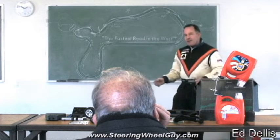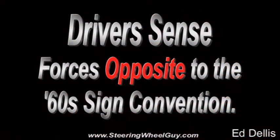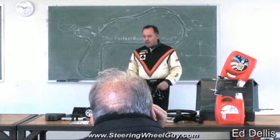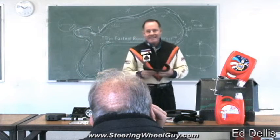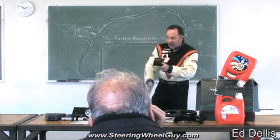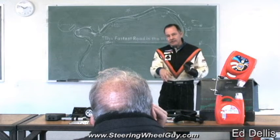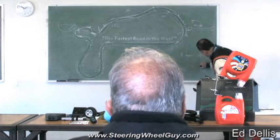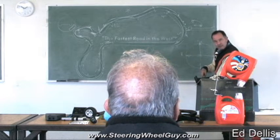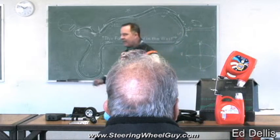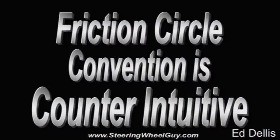The friction circle is really all about the reaction the car has as far as you the driver is concerned. Unfortunately, in the 60s — and I'm a mechanical engineer so I can do a little bashing here — engineers came up with a naming convention that says you cut something, analyze the forces where you cut it, called a free body diagram. So every single G-analyst out there today is bass-ackwards compared to what you the driver feels. It's counterintuitive.